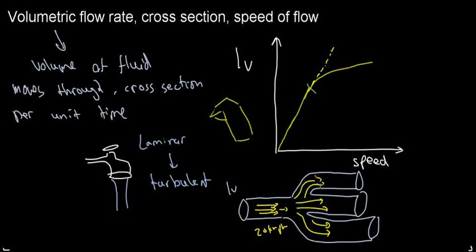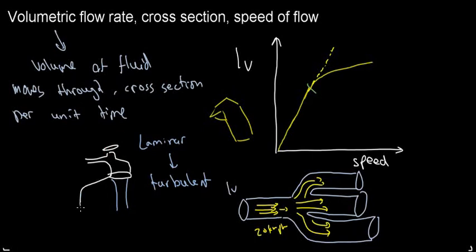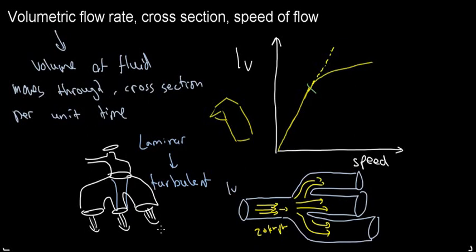The speed of the fluid drops at each branch compared to the main tube, but the total amount of fluid displaced through this cross-section is the same. I haven't changed the volumetric flow rate — I just added a filter that splits flow to three points. So I haven't changed the volumetric flow rate; I just added different places where the water can come out.